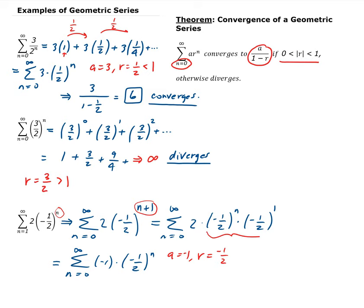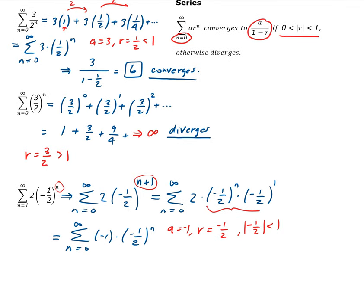This series is converging because the absolute value of r, which is 1 half, is less than 1. So this series approaches a over 1 minus r, which is negative 1 over 1 minus negative 1 half. That simplifies to negative 1 over 1 plus 1 half, giving us negative 2 thirds.